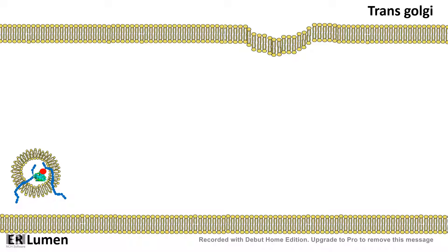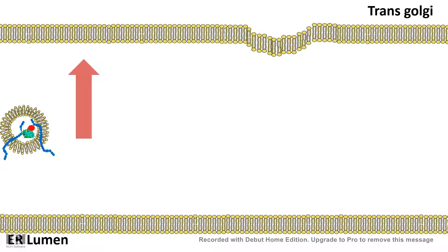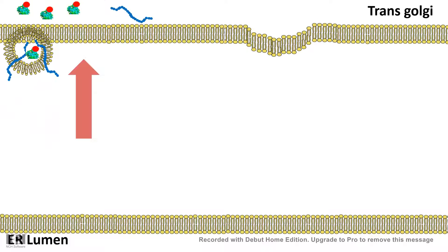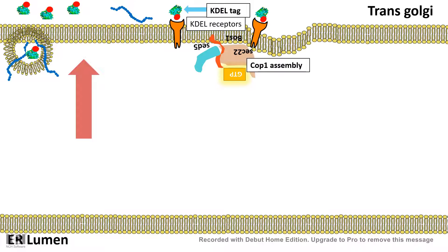When an ER resident protein is mistakenly co-packaged with secretory proteins and delivered to the trans-Golgi network, KDEL receptors in the trans-Golgi network specifically recognize the KDEL sequences on the ER resident protein. The KDEL receptor can interact with COP1 coat proteins, and these COP1 coat proteins assemble onto the trans-Golgi membrane to form vesicles that transport the protein back to the ER lumen.